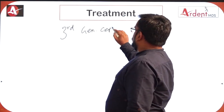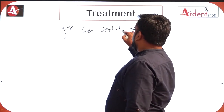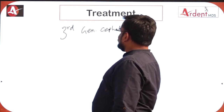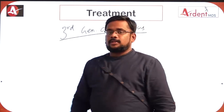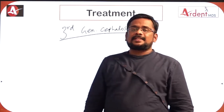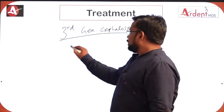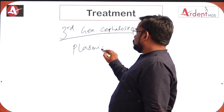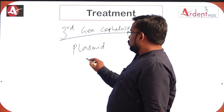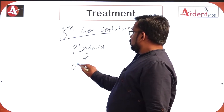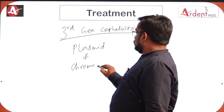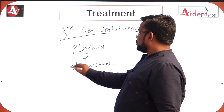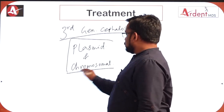The treatment for gonococci is third-generation cephalosporins. However, nowadays microorganisms are resistant even to third-generation cephalosporins. The resistance mechanism occurs through plasmids as well as chromosomal-mediated resistance mechanisms in gonococci.